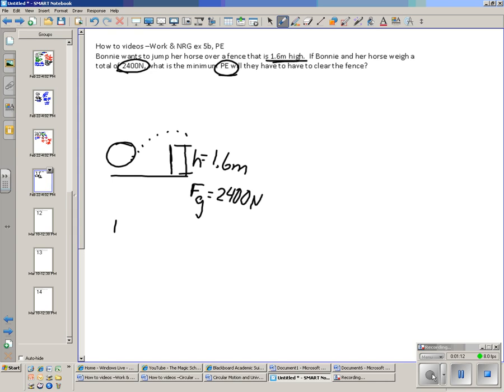Potential energy is equal to a number of things. The most easily recognizable one is just MGH. It's also equal to the work done, though it doesn't say anything about work. So let's look at MGH.